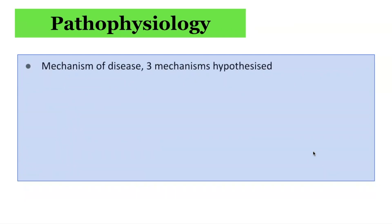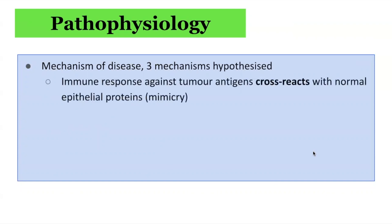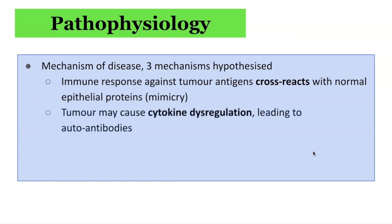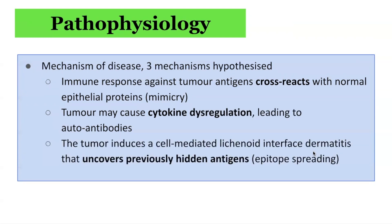In terms of the mechanism of disease, three key mechanisms have been hypothesized. One is an immune response against tumour antigens which leads to a cross-reaction, and hence the body develops a response against normal epithelial proteins in a process called molecular mimicry. Another mechanism includes the tumour inducing cytokine dysregulation, which leads to autoantibodies. A third mechanism includes a tumour inducing a cell-mediated lichenoid interface dermatitis that uncovers previously hidden antigens in a process known as epitope spreading.